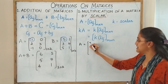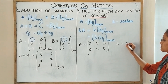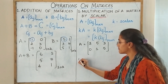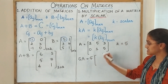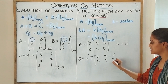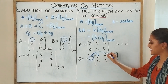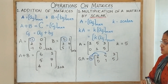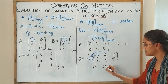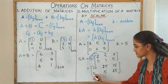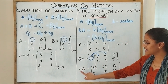If I take A equal to a given matrix and choose k equal to 5, then 5A equals 5 into the matrix A. Now multiply 5 to every element of A, and hence you get the resulting matrix. This is the multiplication of a matrix by a scalar.